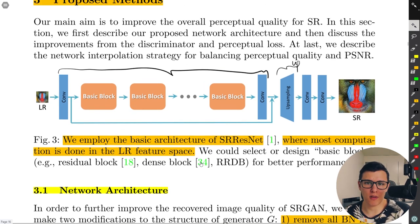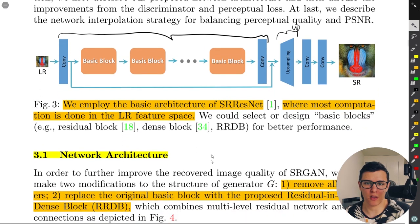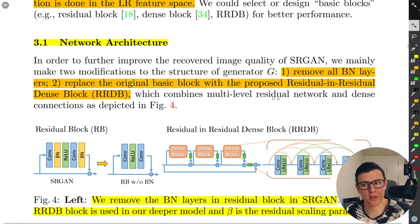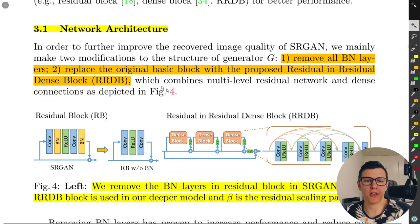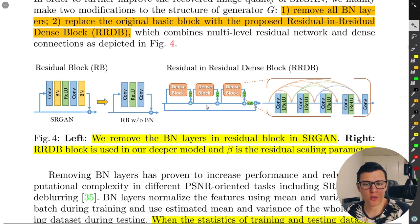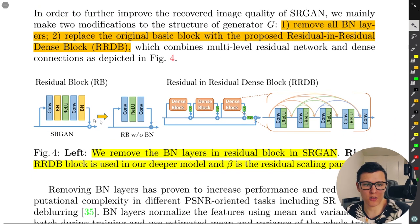They should have definitely mentioned those changes in the paper. For the network architecture, they remove all the BatchNorm layers and replace the original basic block with the proposed RRDB block. In the original design you had conv-batchnorm-ReLU-conv-batchnorm; they remove the batchnorm.